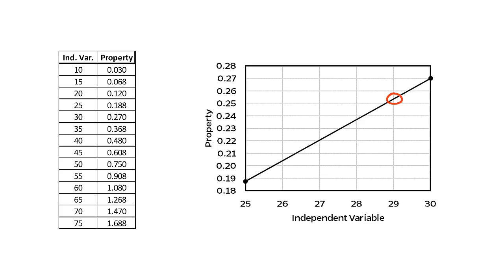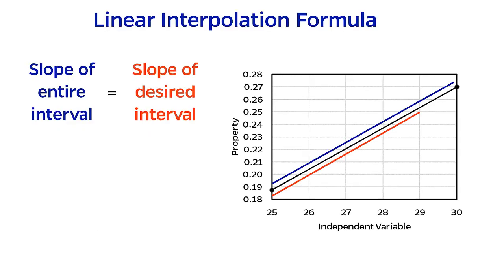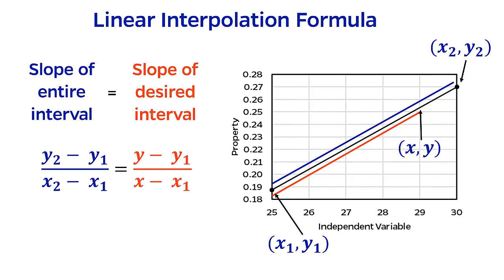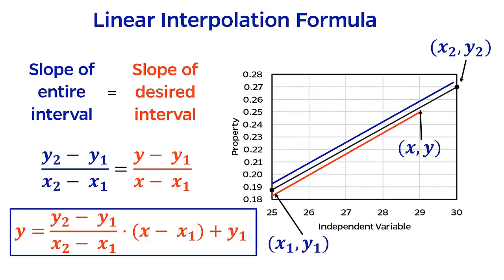But nobody wants to go through the trouble of plotting data like this every time you need a value. Thankfully, there is an easier way. The way I like to think about the linear interpolation formula is by setting the slope of the line connecting the entire interval equal to the slope of the desired interval. Going back to algebra class, slope equals rise over run, where rise is the difference in the dependent variable values, and run is the difference in the independent variable values. Based on what you want to solve for, rearrange the equation to isolate your unknown variable.